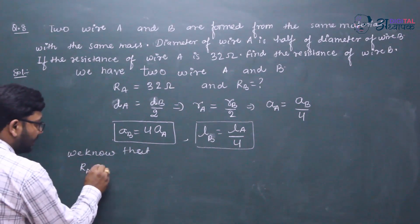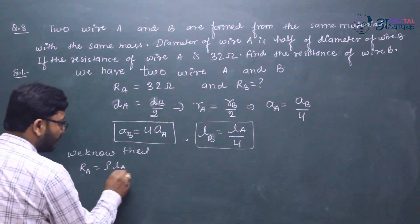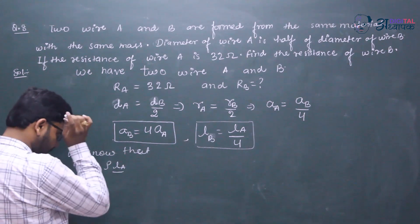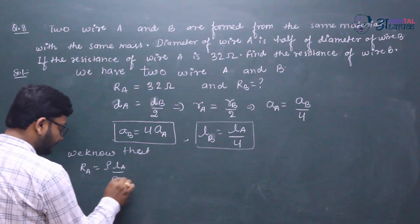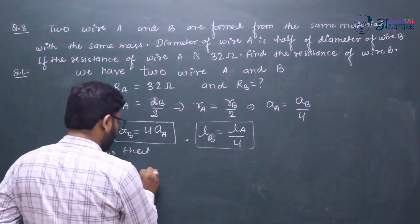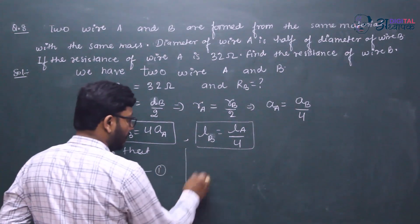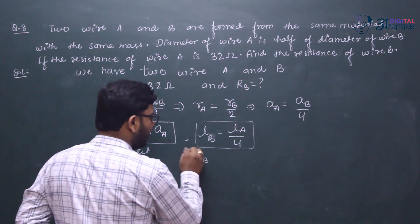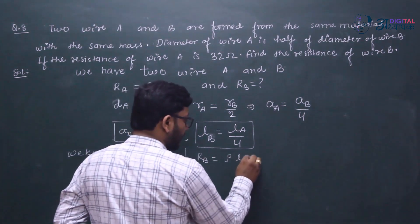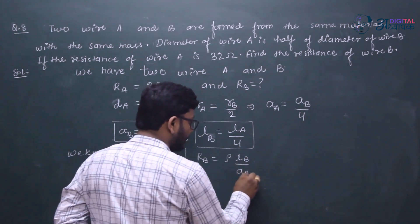RA is equal to ρLA upon AA. This is supposed to be equal to number 2, and RB is equal to ρLB upon AB.